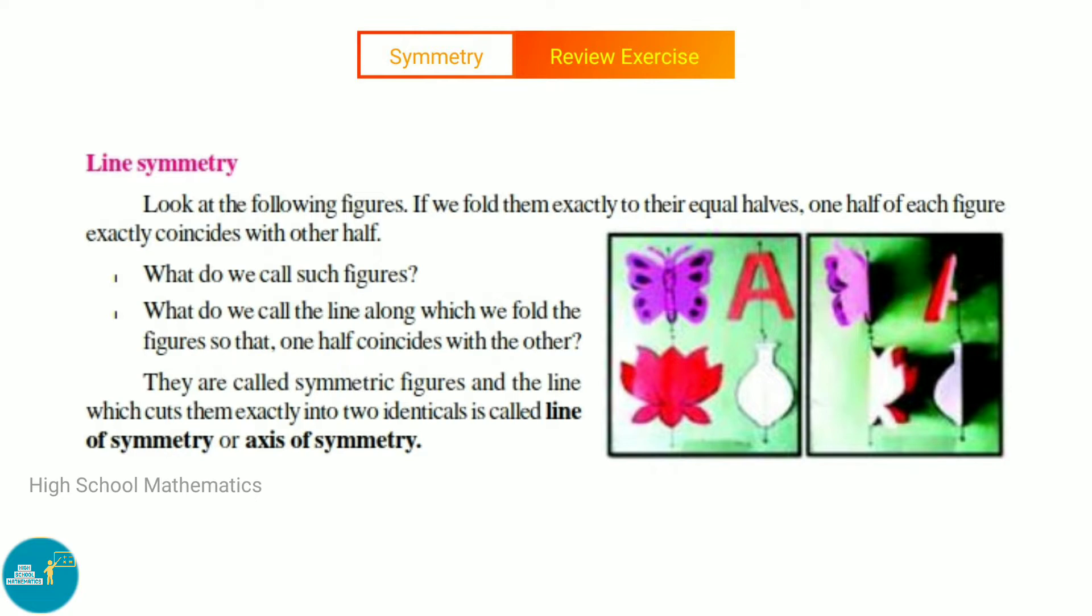What do we call such figures? They are called symmetric figures. What do we call the line along which we fold the figures so that one half coincides with the other? The line which cuts them exactly into two identicals is called the line of symmetry or axis of symmetry.